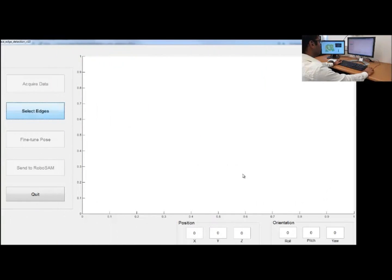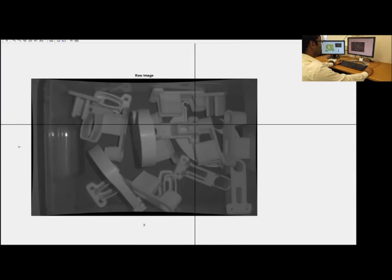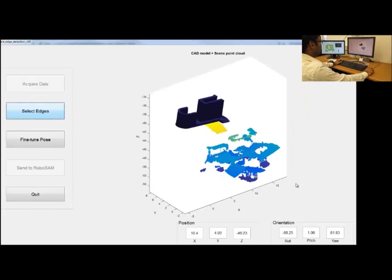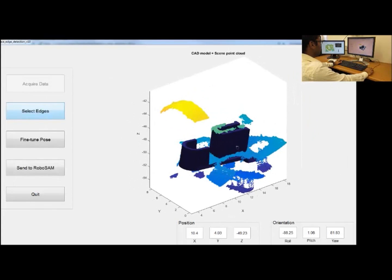The human provides cues by selecting edges on the image and the corresponding ones on the CAD model. The system uses this information to estimate the part location in the bin, and shows the estimated location in the point cloud.